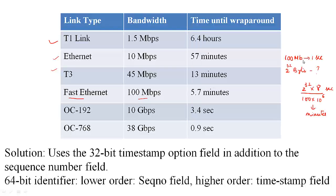100 megabits you are sending in one second, and you are incrementing the sequence number space for every byte, and you have 2 to the power of 32 bytes for the sequence number space to wrap around. If you do the calculation, this turns out to be 5.7 minutes. This time for wrap around is shown for a variety of these links.